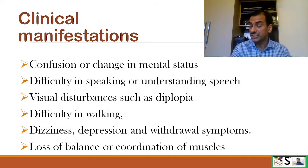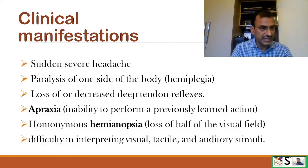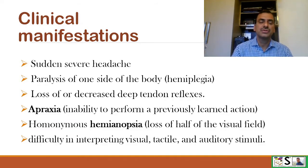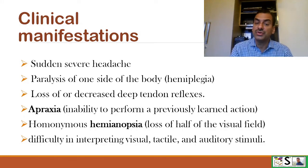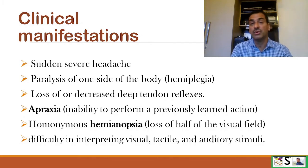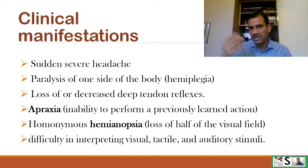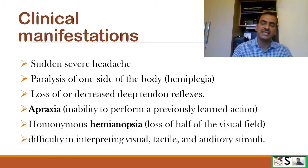Additional signs and symptoms include dizziness, depression and withdrawal symptoms, loss of balance or coordination of the muscles, sudden severe headache, and paralysis of one side of the body known as hemiplegia. Loss or decrease of deep tendon reflexes, apraxia (inability to perform previously learned actions), homonymous hemianopia (loss of half of the visual field), and difficulty in interpreting visual, tactile, and auditory stimuli may also be present.